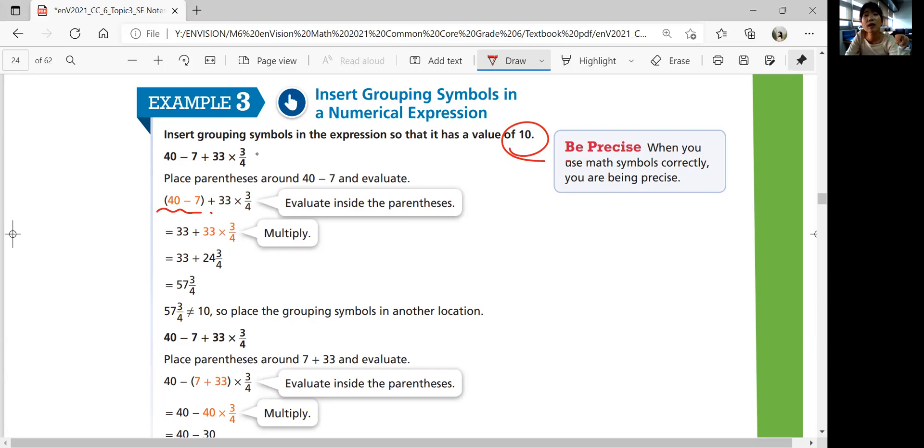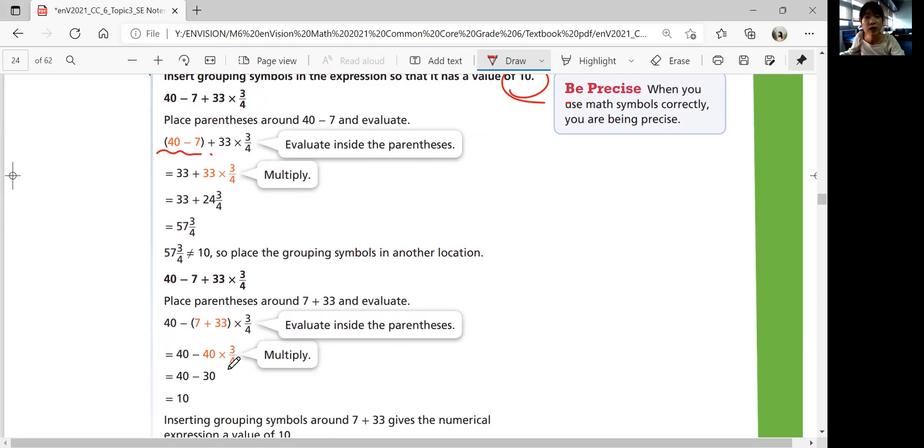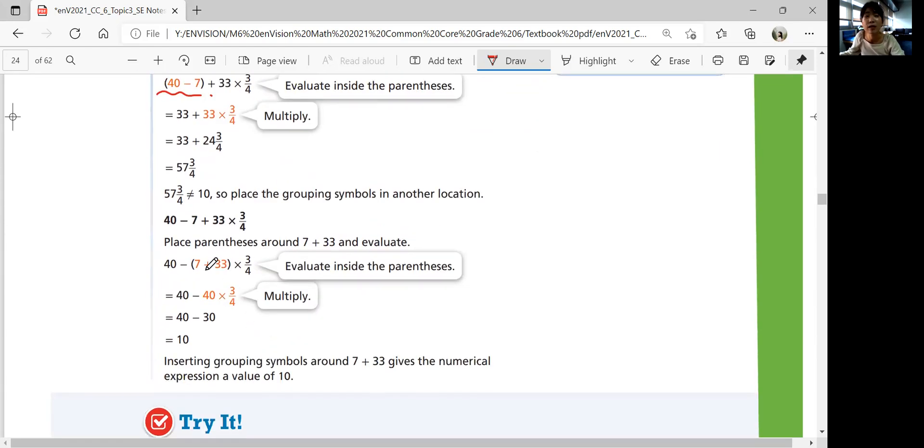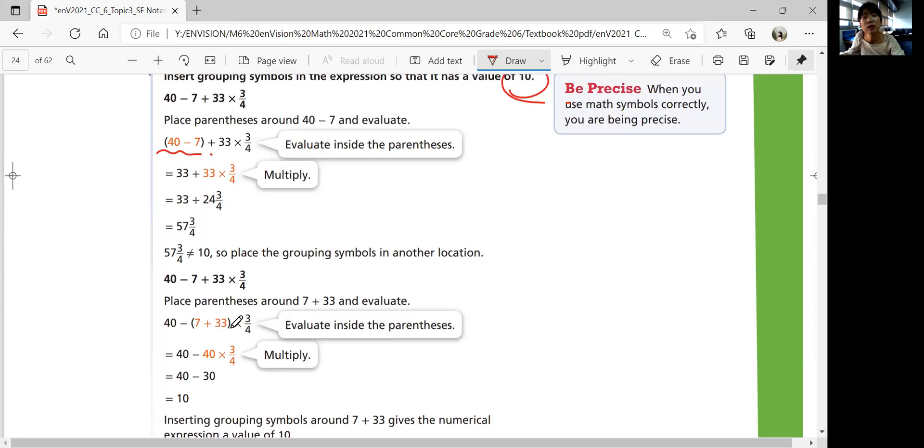So let's try a different group of symbols. Let's try parentheses over 7 and 33, not including the negative sign. And then we add 7 plus 33 to get 40. We multiply that by 3 over 4. That's 30. And so we subtract it from 40. We get 10. And that's exactly what we want.